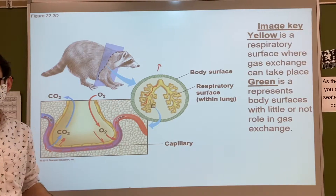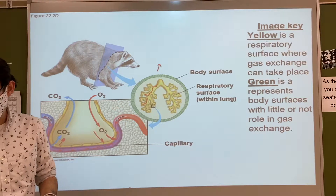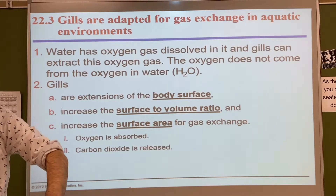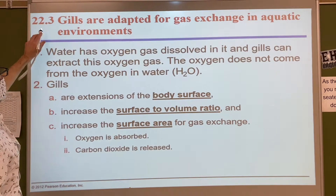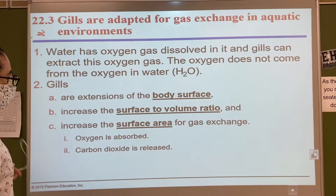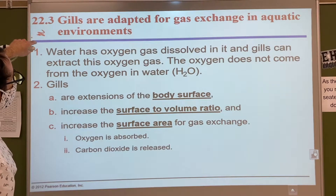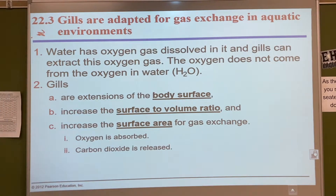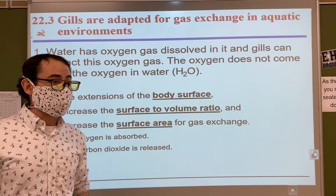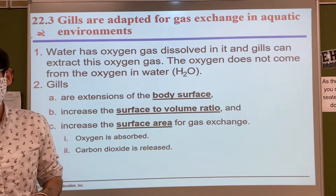That's very similar to what's happening in the fish and the earthworm. The only thing that's different is the structure where gas exchange is taking place. Once you get to a respiratory surface, they all pretty much do the same thing. Now moving into section 22.3, we're going to talk about gills and then go through each of the systems throughout this chapter.